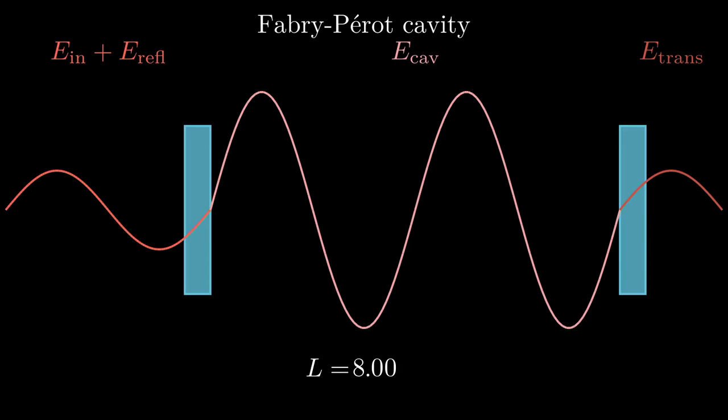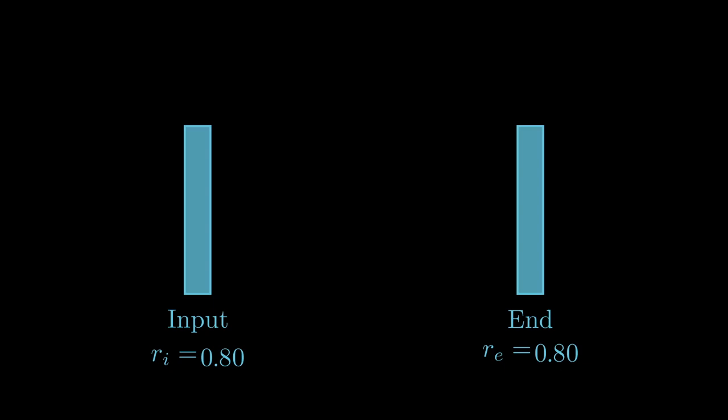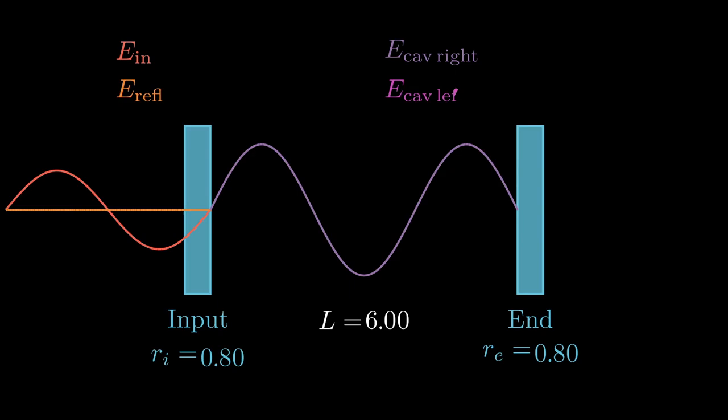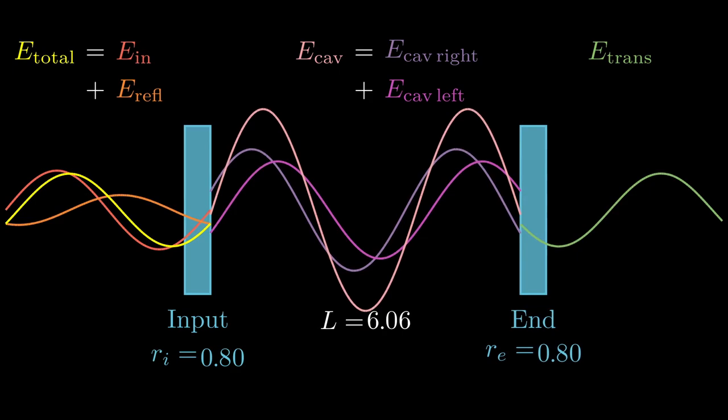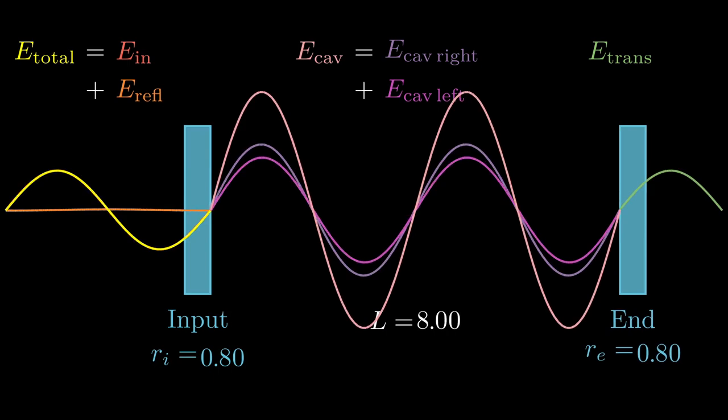Let's rebuild the Fabry-Perot cavity and label everything a little bit more carefully. We have our input mirror in front and behind the end mirror, aligned at a length L apart. Next we have our input beam, our reflected beam, our intra-cavity beam going to the right and to the left, and finally our transmitted beam. We can also draw the total beams in front of and inside the cavity. Now let's move the cavity length once more. At the cavity length equal to 8, the cav left and cav right beams align, producing a large standing wave. This corresponds to a massive increase in inter-cavity power.